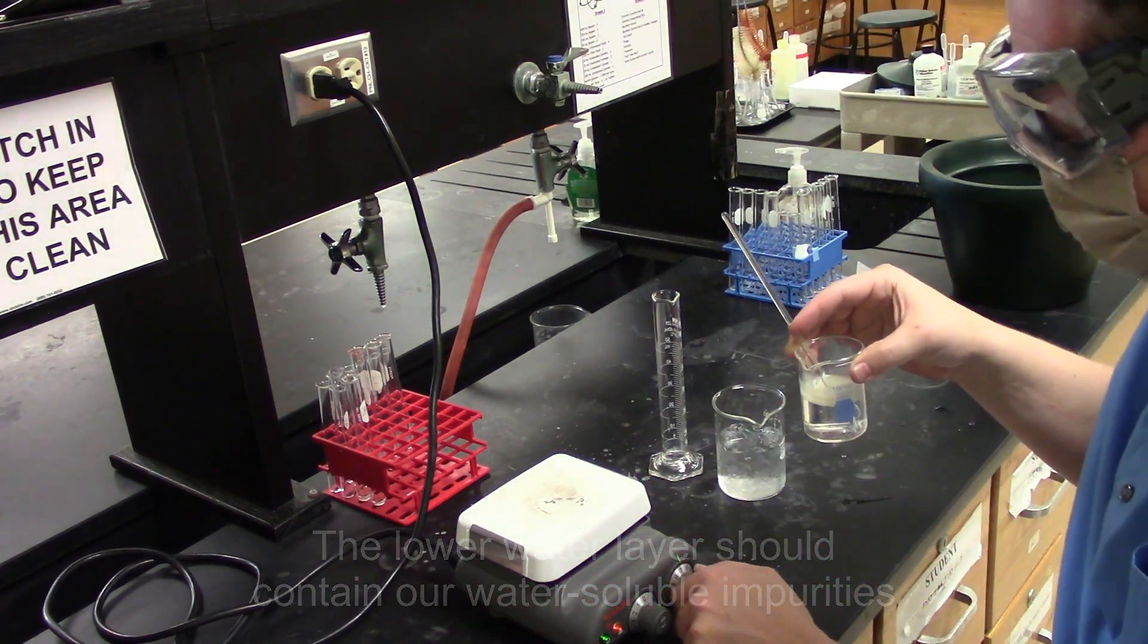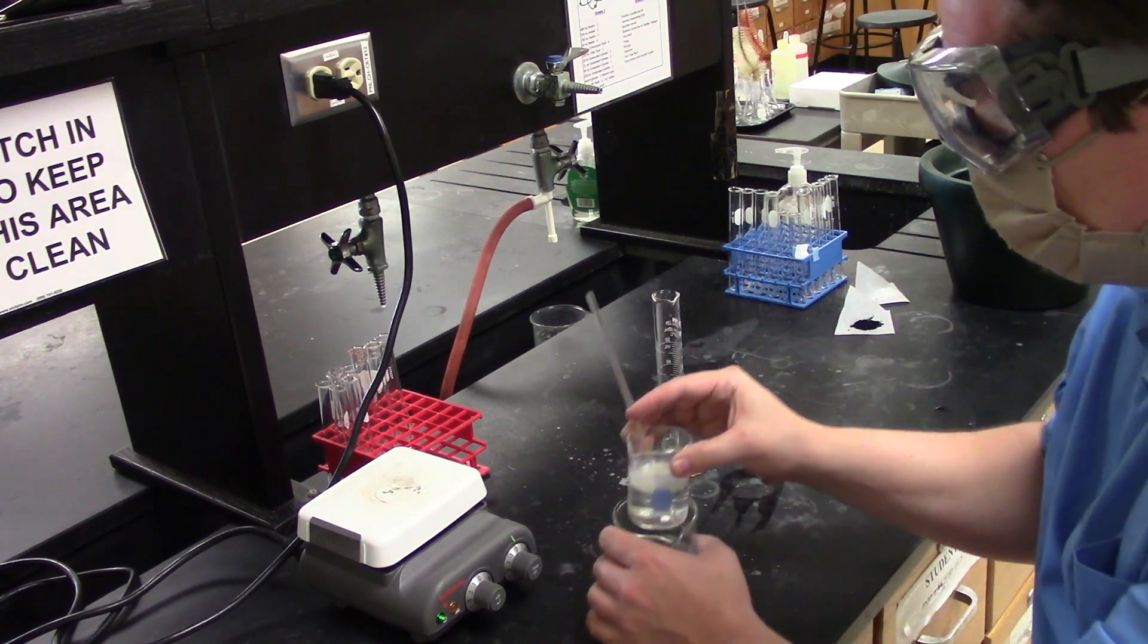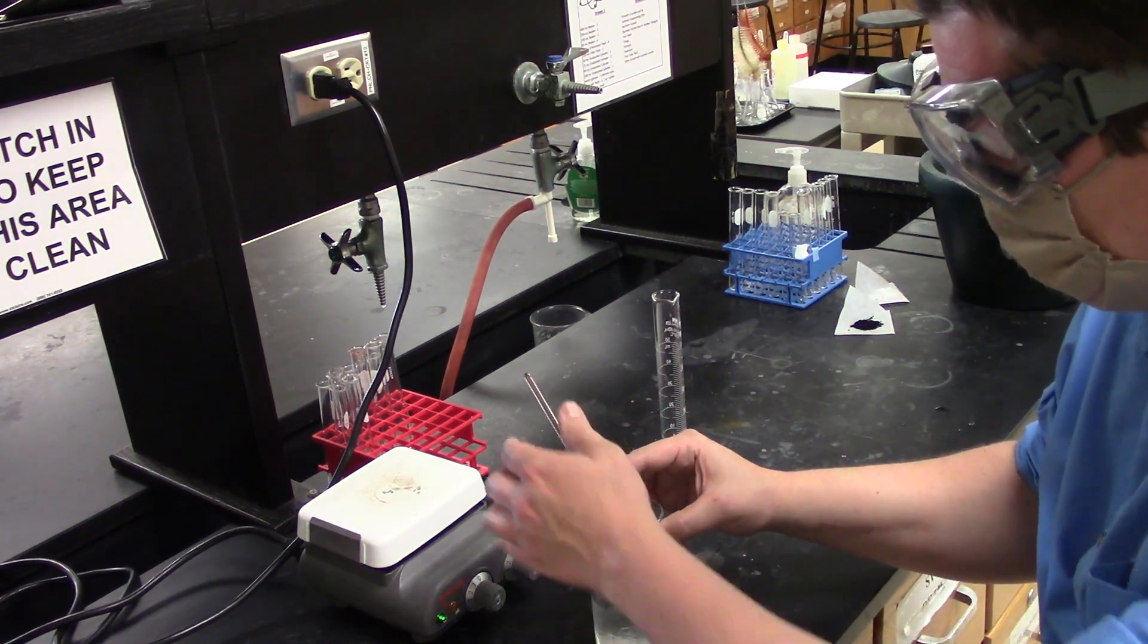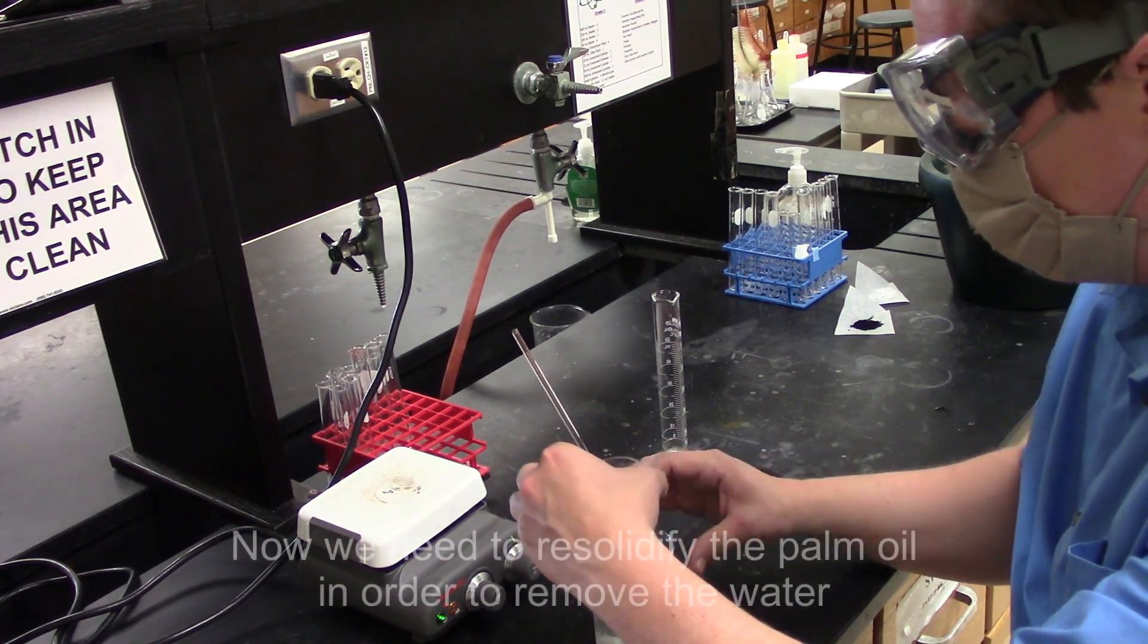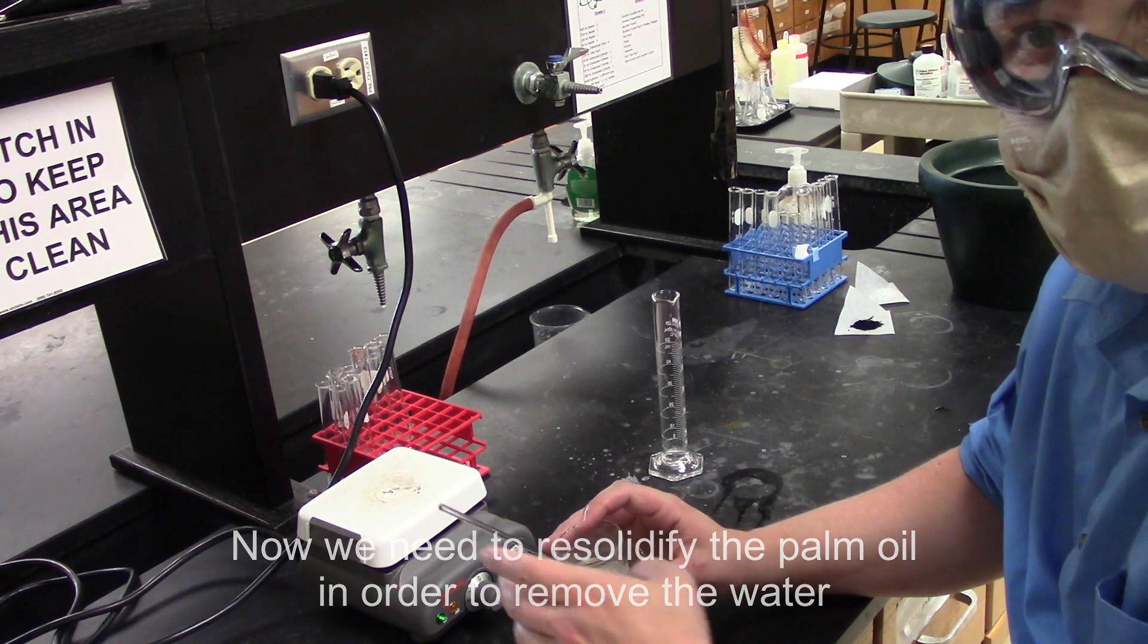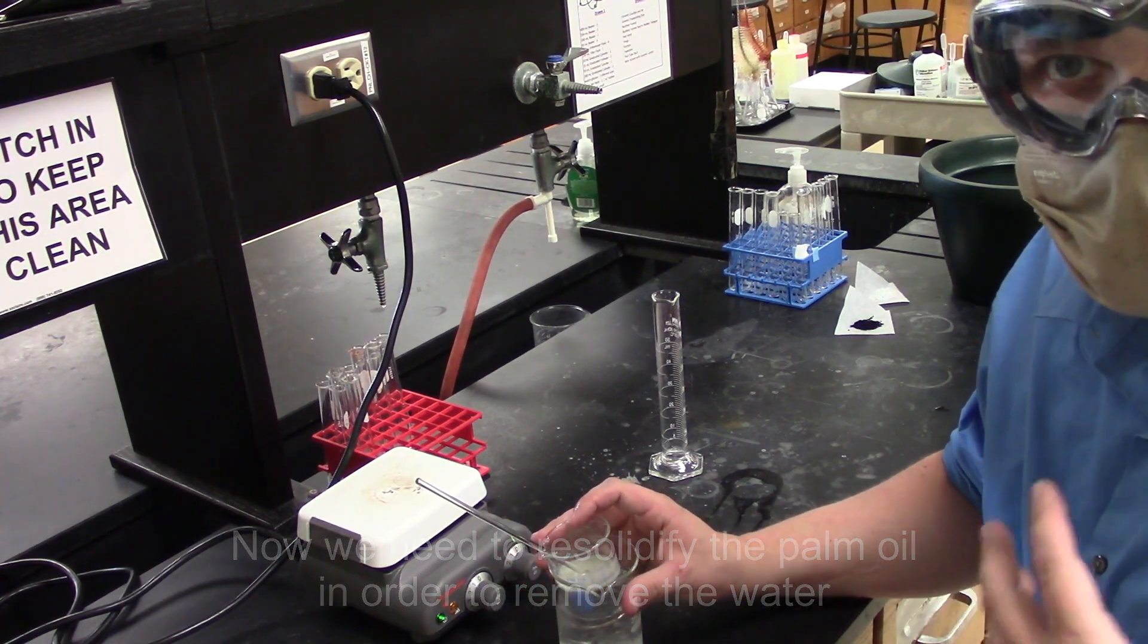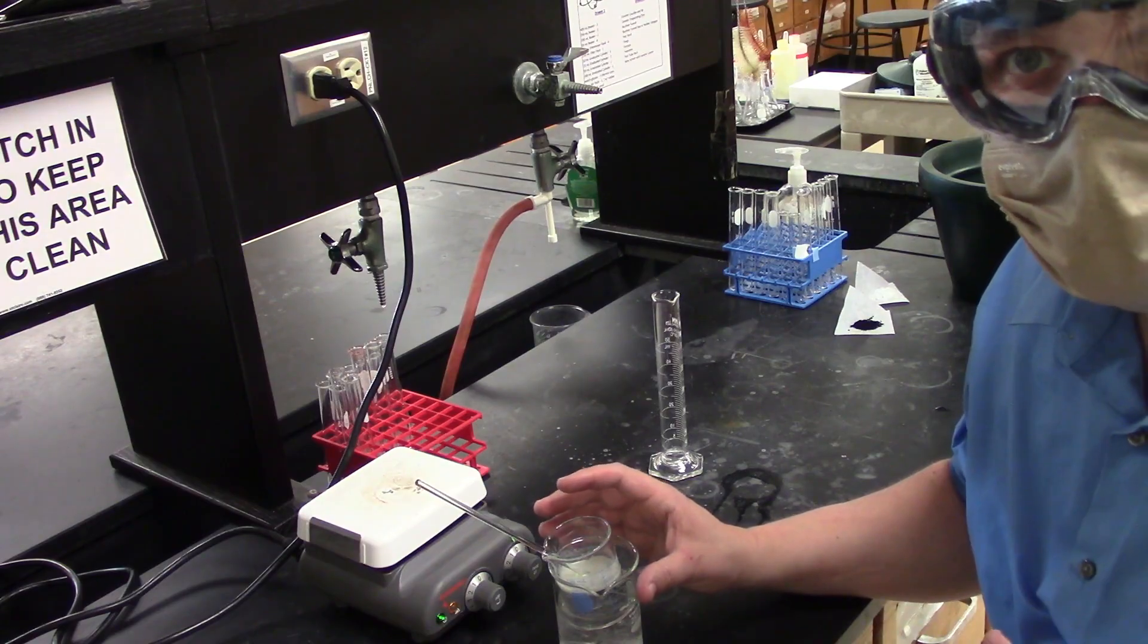So now that we've got it good and melted and stirred up, next up is we're going to dunk it in ice water. Of course it's going to be stubborn on me today. What we're going to wait for is for it to re-solidify, and when it gets done re-solidifying, that's when we'll decant off the water phase. So I'll cut the video and we'll fast forward to when it finally solidifies.